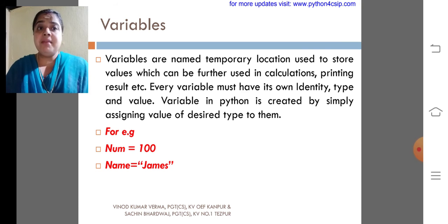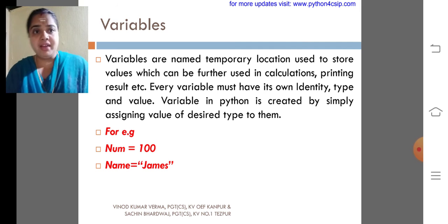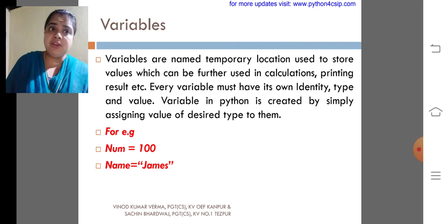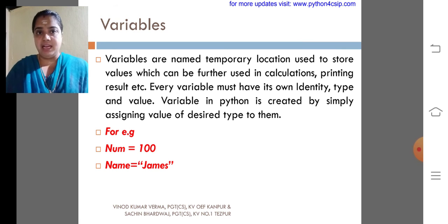Variables are named temporary locations used to store values which can be further used in calculation, printing, results, etc. Every variable must have its own identity, type and value.